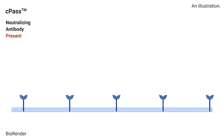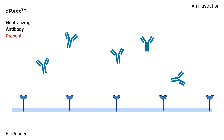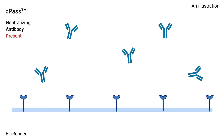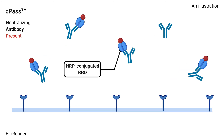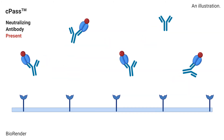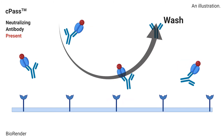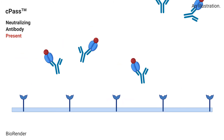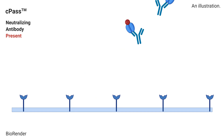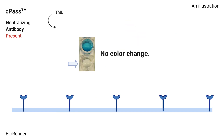On the other hand, if there are neutralizing antibodies, the RBD will not bind to ACE2. The HRP-RBD protein will then be washed away and we will not see a color change. This is a positive test result.